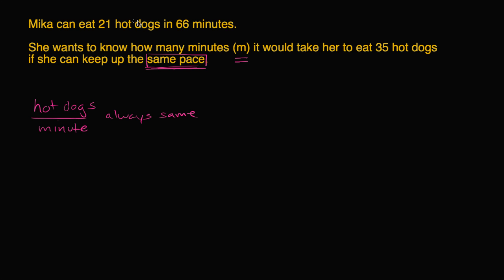It tells us that she can eat 21 hot dogs in 66 minutes. So her hot dogs per minute is 21 over 66. If her pace is always going to be the same, this ratio is going to equal the ratio between 35 hot dogs and however long it takes her to eat 35 hot dogs. So hot dogs per minute has to be constant: 21 hot dogs takes 66 minutes, 35 hot dogs take M minutes — these two ratios are going to be the same.